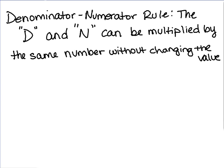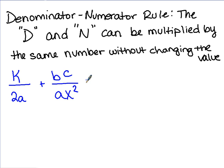We're going to do an example to illustrate this. When you're writing that definition, go ahead and write k over 2a plus bc over ax squared minus m over ax cubed.